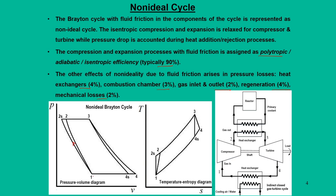In a typical non-ideal cycle, isentropic efficiencies are in the range of 85 to 90 percent. Other non-idealities due to friction occur in components like heat exchangers, combustion chambers, gas inlet and outlet, regeneration, and mechanical losses. Had the process been isentropic, compression would follow path 1 to 2s, but due to non-idealness, the actual cycle follows 1, 2, 3, 4. The main intention is to quantify net work and cycle efficiency by introducing these terms.